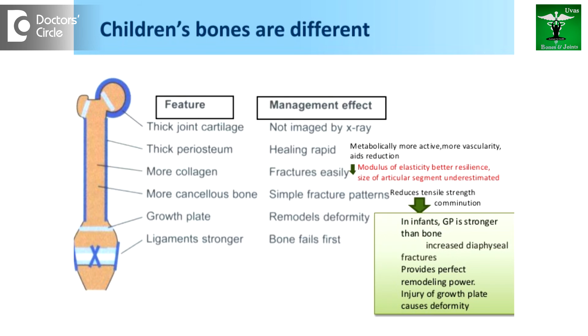The most common fracture sites in children are the elbow, the lower end of the radius, the forearm, the tibia, the femur, and very rarely the neck of the femur.